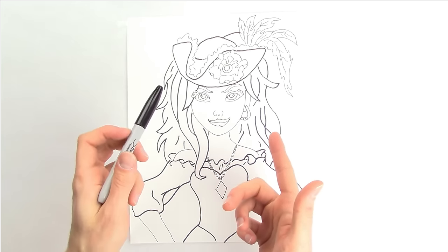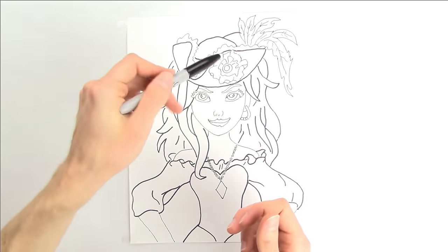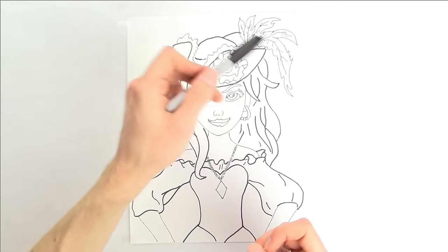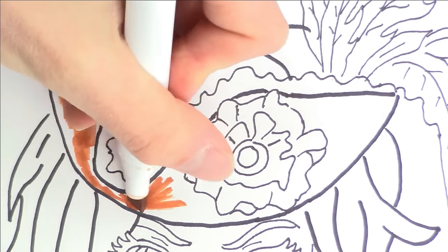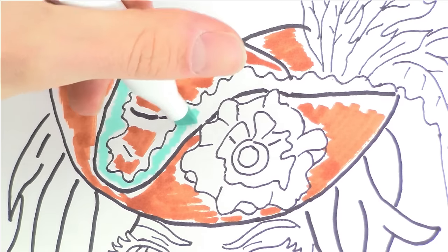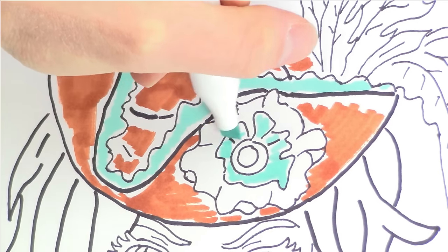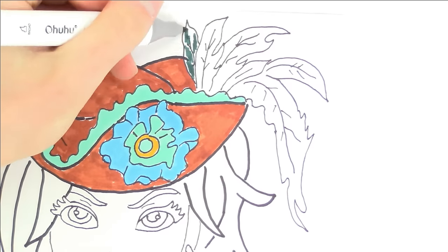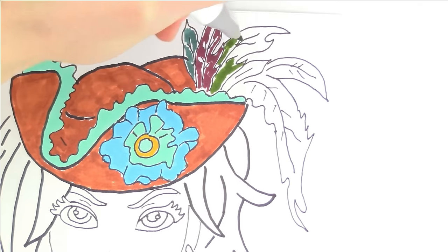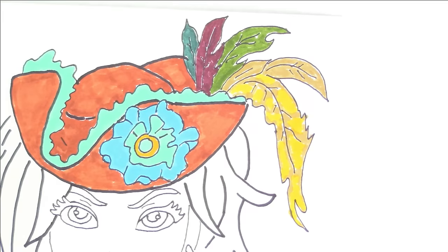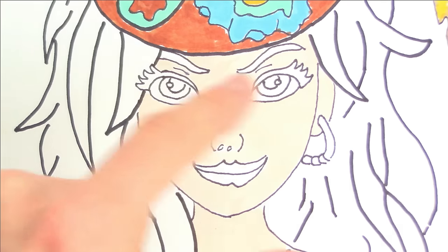There we go. Okay, now we just need to color her in so let's do the pirate hat first. We'll use some brown, some blue, and some random colors for the feathers. Now for her face we'll use black for her lashes, green for her eyes, and some purple lip gloss.